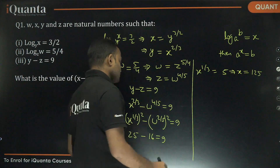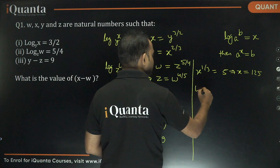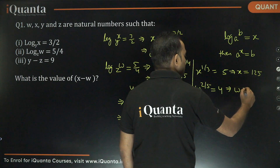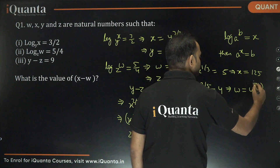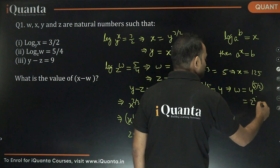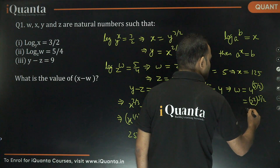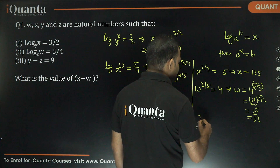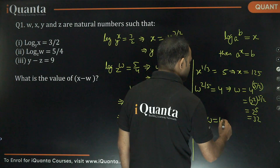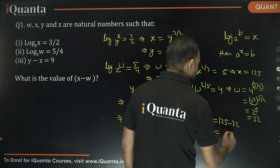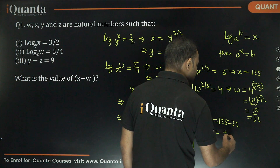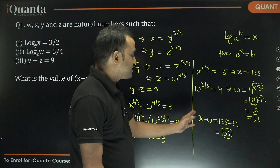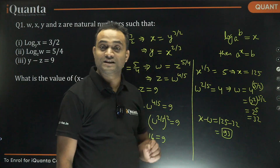Similarly, (W to the power 2 by 5) squared is 16, so W to the power 2 by 5 is equal to 4, meaning W equals 4 to the power 5 by 2, which is 2 squared to the power 5 by 2, which is 2 to the power 5, that is 32. So the difference X minus W is 125 minus 32, which equals 93. The answer for this question is 93.